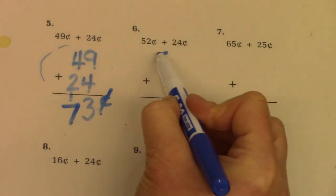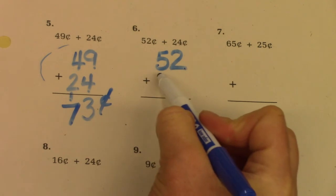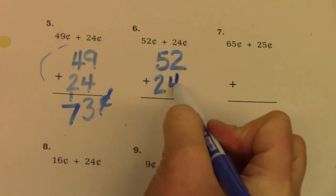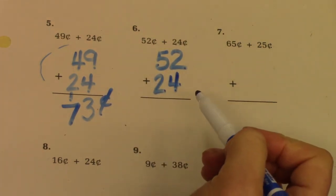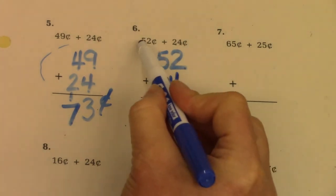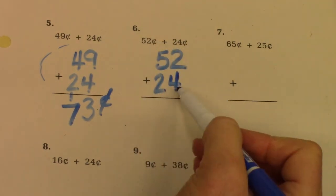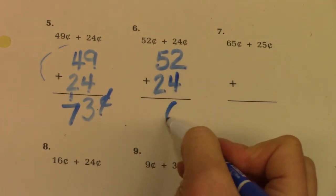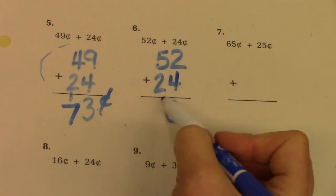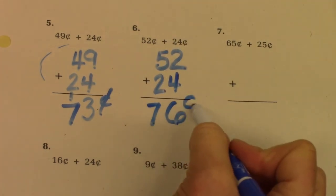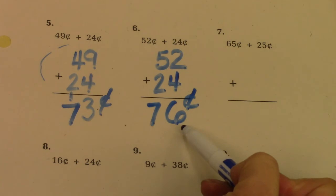Here I'm going to write 52 plus 24 but I'm going to write them vertically instead of horizontally. 4 plus 2 is 6 and 5 plus 2 is 7. My answer is 76 cents.